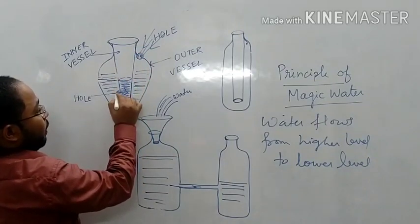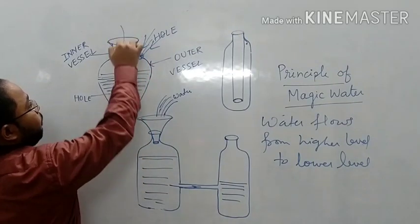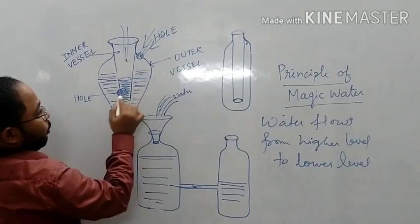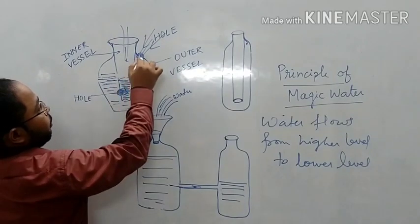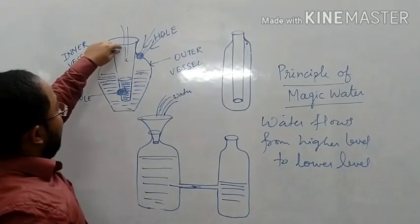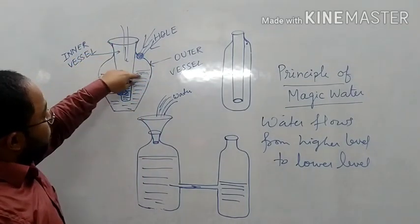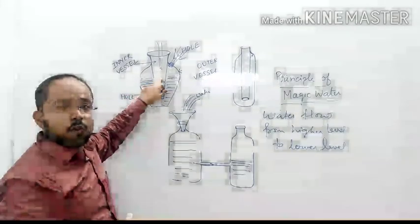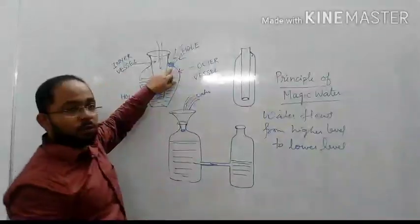Now, since we have a hole here, when I am pouring water here, the water will accumulate in this portion because I have two holes here. One hole is here, one hole is here. So water will go inside and some of the water will accumulate in this vessel also. And what is the function of this hole?